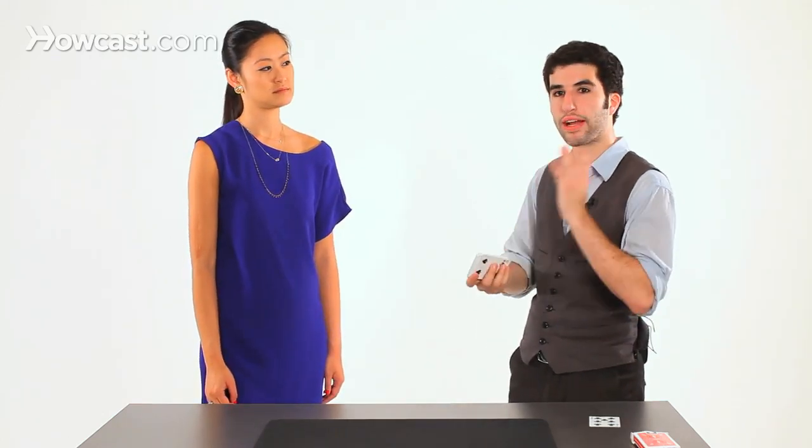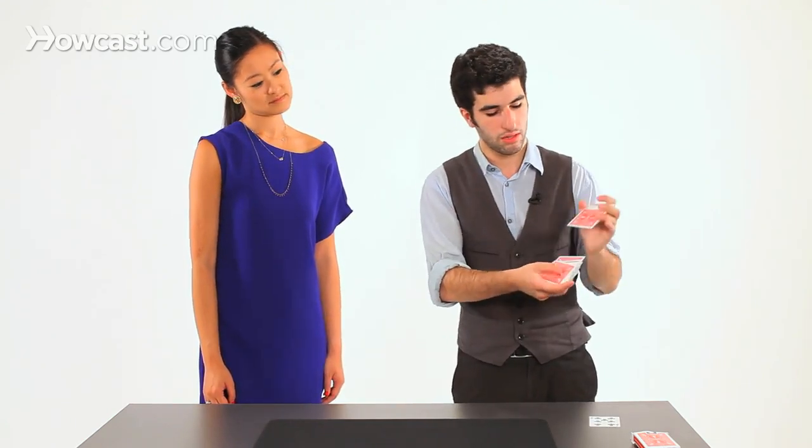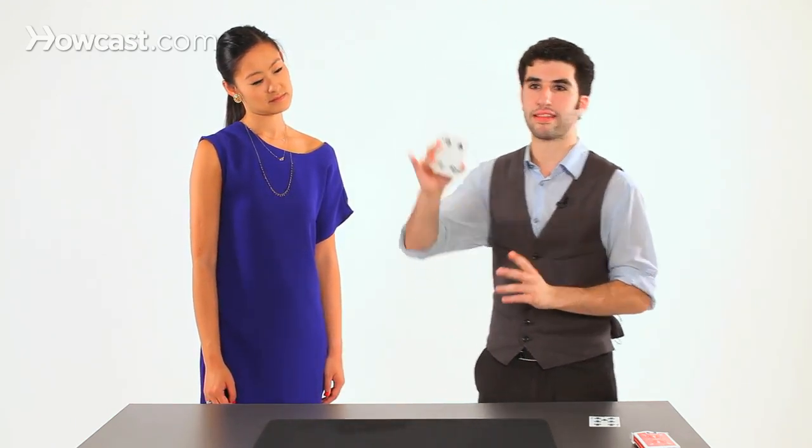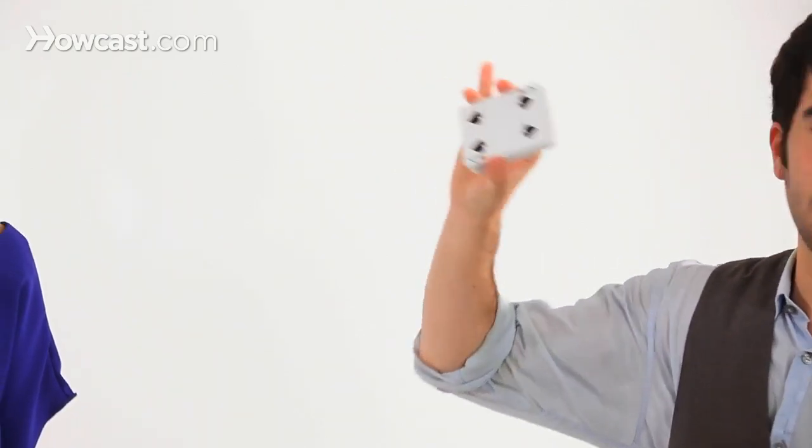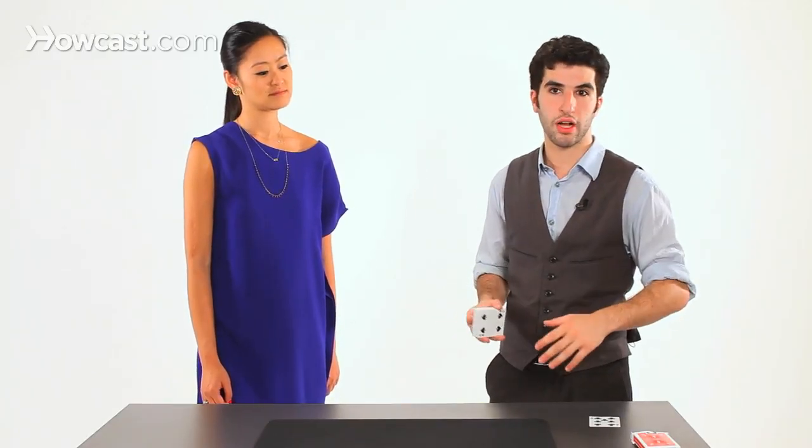Now, using the overhand shuffle control, I'm actually able to guarantee that the four of spades will end up right back at the bottom of the deck. Once it's on the bottom of the deck, you're pretty much good to go.